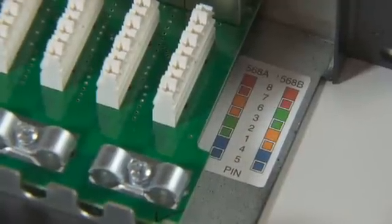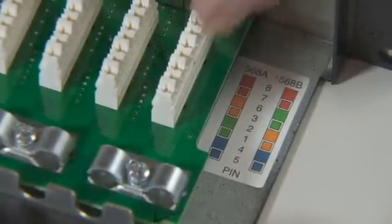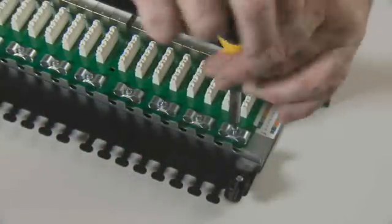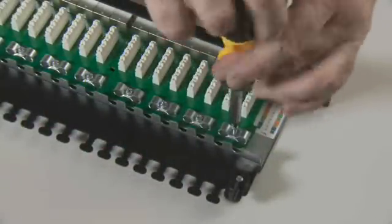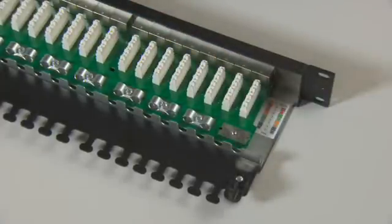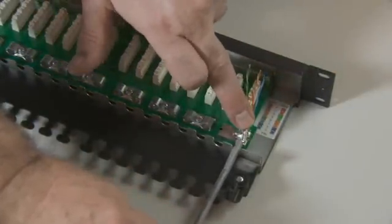To maintain the integrity of the shield within the cabling system, we need to ground the shields of the cable to these grounding clamps. Starting from right to left, line the cable up with the management bar and the leading edge of the IDC block.